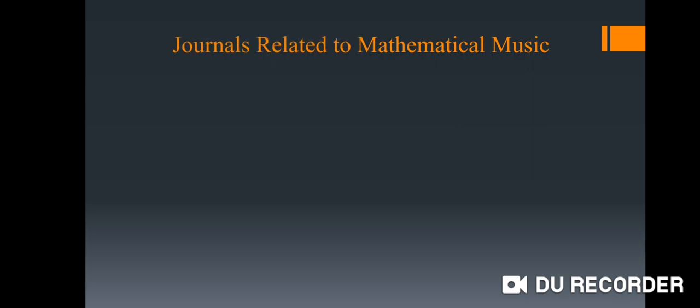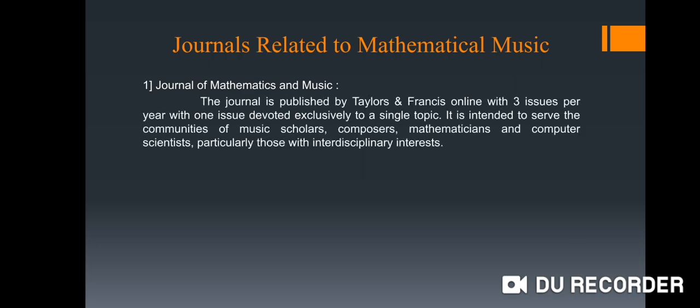So let's see the journals which are having scope in mathematical music. The most beautiful and interesting one is the Journal of Mathematics and Music published by Taylor and Francis online with three issues per year with one issue devoted exclusively to a single topic, intended to serve the communities of music scholars, composers, mathematicians and computer scientists, particularly those with interdisciplinary interests.